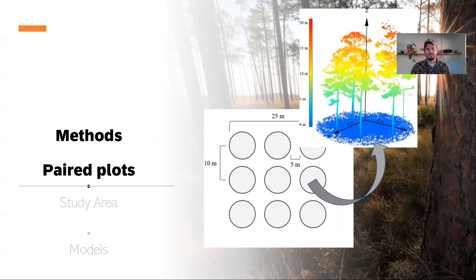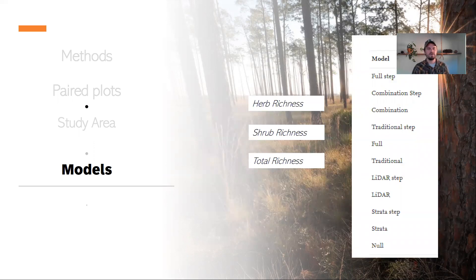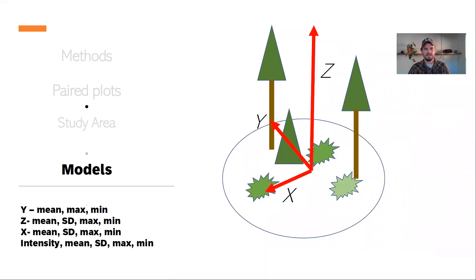In each one of those subplots, we also conducted a terrestrial LiDAR scan. For the model, we wanted to compare and see could we build a model based on the traditional metrics, the metrics we'd already been taking, those field metrics, the new metrics from the LiDAR, or some combination. We wanted to see using those different models, could we predict herb richness, shrub richness, and total richness as a test.